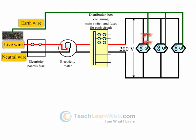It is used as a safety measure to ensure that any leakage of current through a metallic body of high-powered device flows to the earth through the earth wire. Thus, it protects our body from severe electric shock.